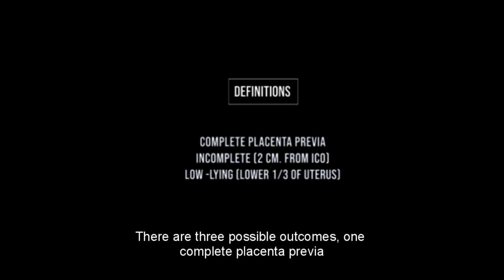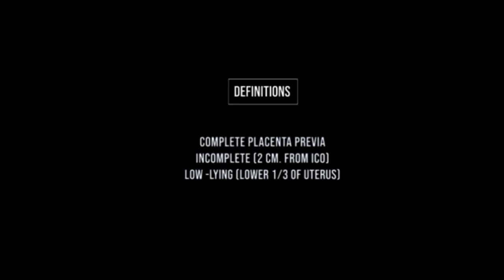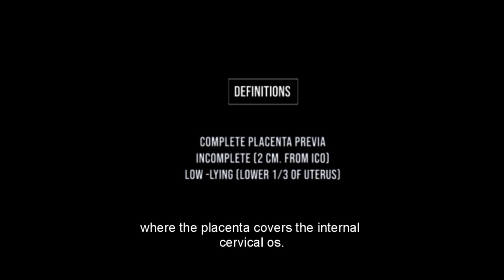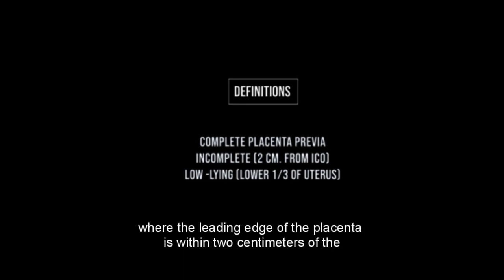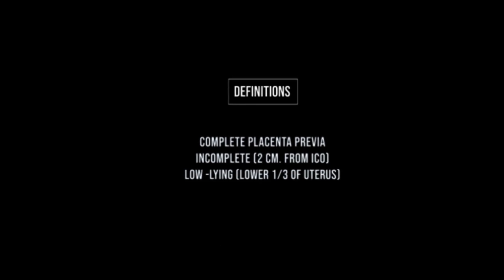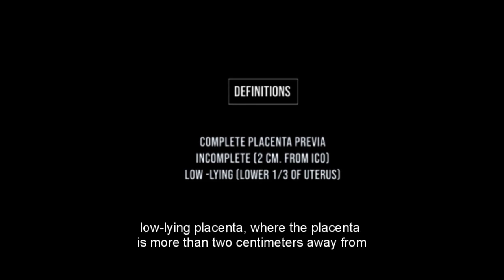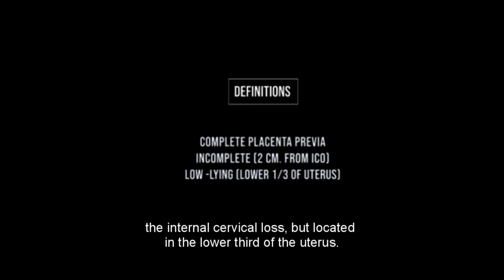There are three possible outcomes. First, complete placenta previa, where the placenta covers the internal cervical os. Second, incomplete placenta previa, where the leading edge of the placenta is within 2 centimeters of the internal os. Third, low-lying placenta, where the placenta is more than 2 centimeters away from the internal cervical os but located in the lower third of the uterus.